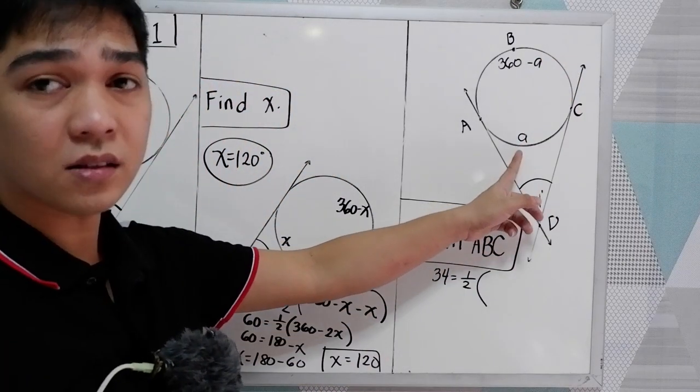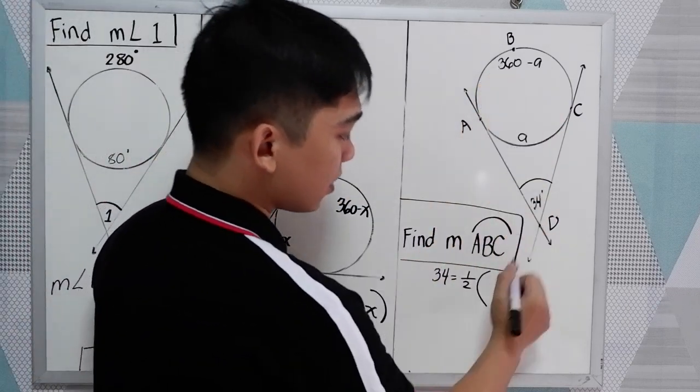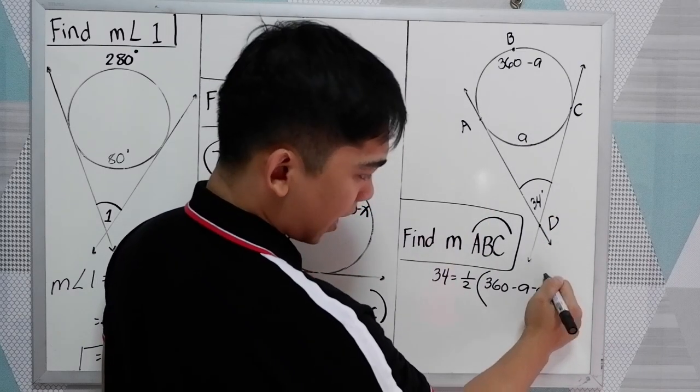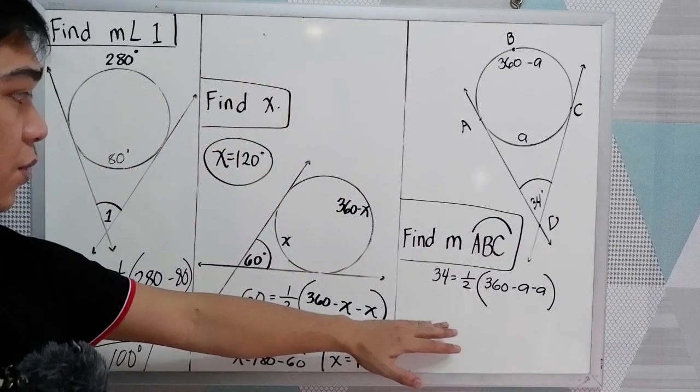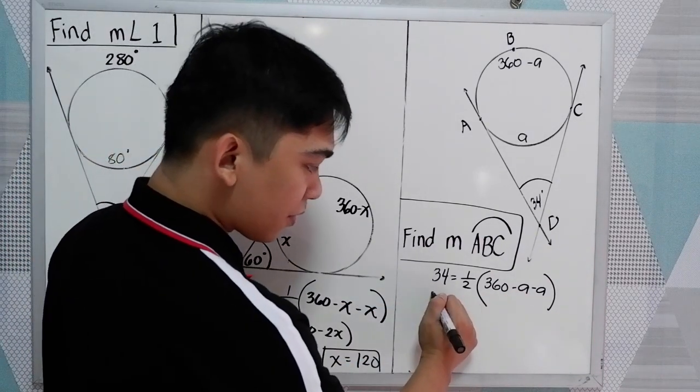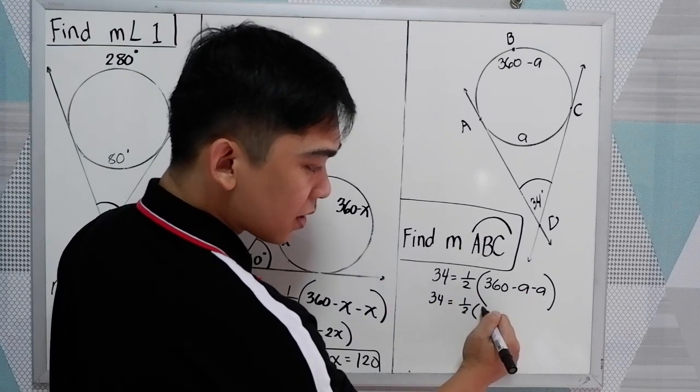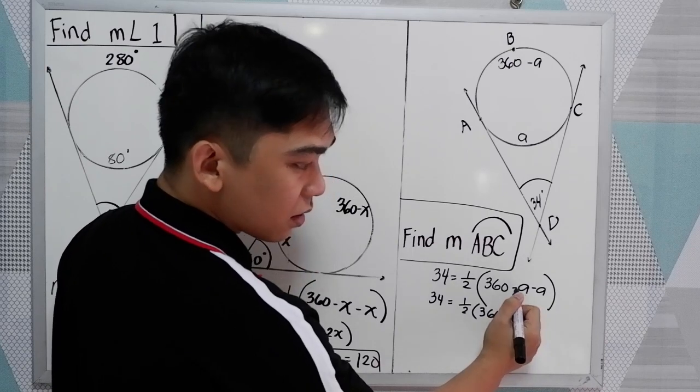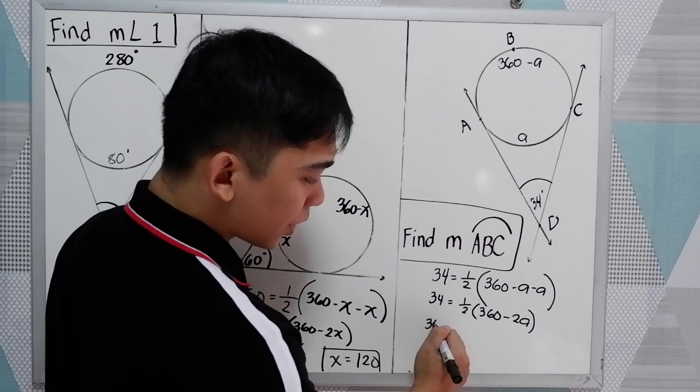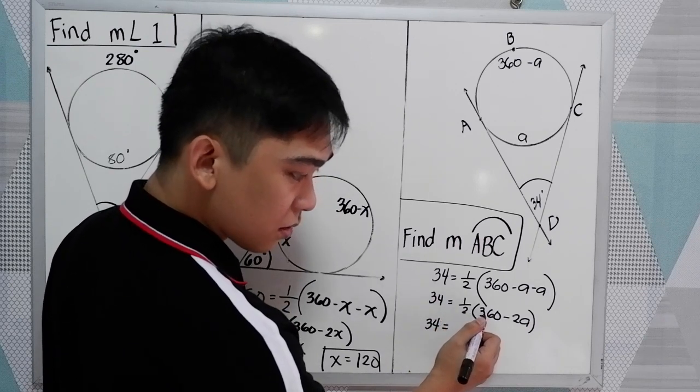If you want to use x, that's okay. So we have 360 minus A, so we have 360 minus A minus A. The same process with number 2. We're going to find the value of A first. So we have 34 is equal to one-half times 360, negative A minus A, negative 2A.